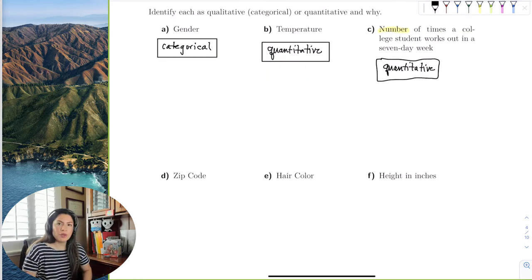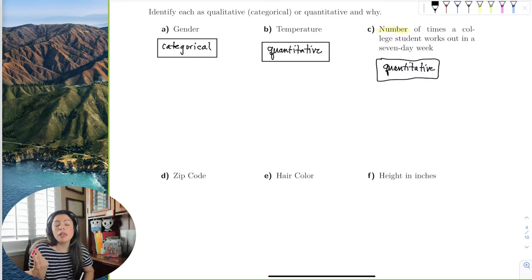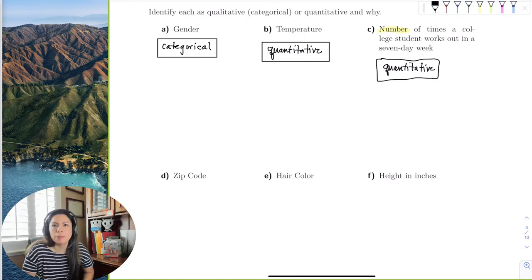What about a zip code? And some of you are like, well, zip code is a number. Yes, so that's a number, but then you ask yourself, well, could I find the average zip code? Could I add a bunch of zip codes and get an average zip code? No. So this is my ace in the hole. This is the kicker, where the answer is obviously numerical, but it gives no meaningful results when I apply arithmetic operations.